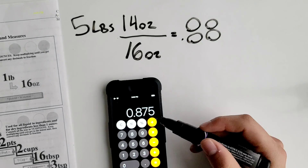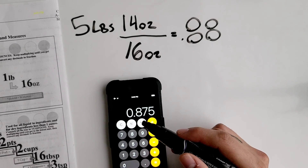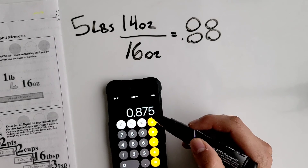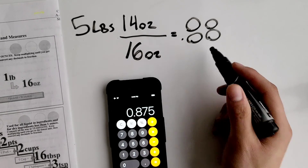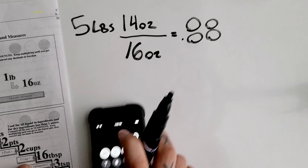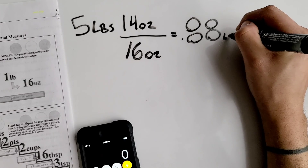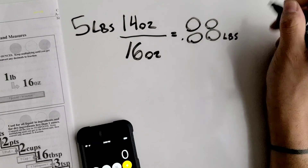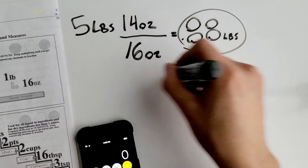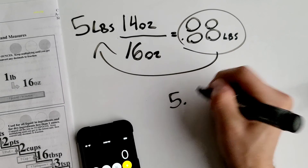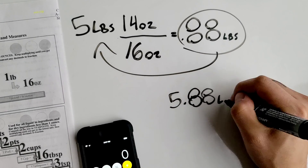We had to round up because we're rounding to the hundredths place. If the third decimal digit is 5 or above, we round up; if it's 4 or below, we round down. That's why we get 0.88 pounds. Now that we have both values in the same unit, we just add them together: 5 plus 0.88 equals 5.88 pounds.